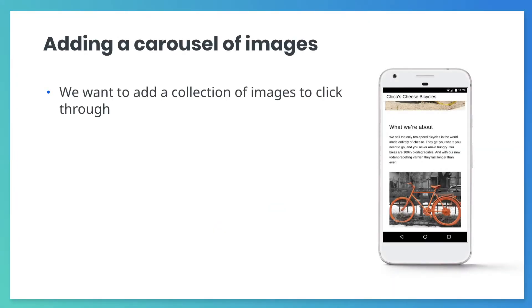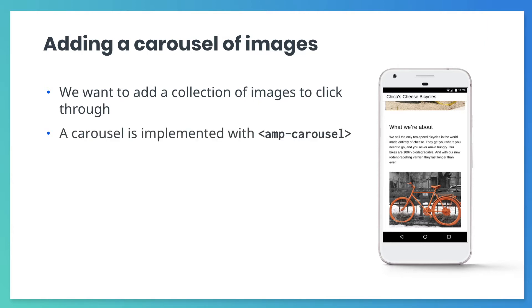Our next task will be to add a collection of images of cheese bike products for our users to scroll through. Sometimes this is called an image slider or an image carousel. Fortunately, AMP has a component called AMP Carousel for just this purpose. AMP Carousel isn't a built-in component, so you need to add a script in the head of your page.